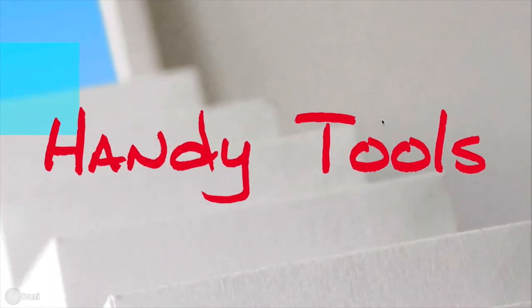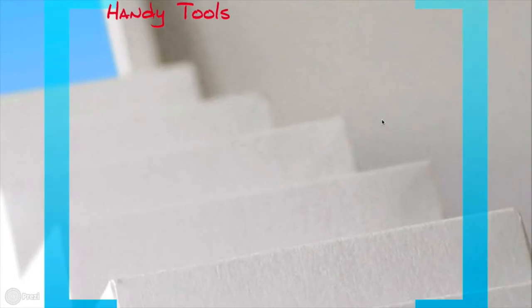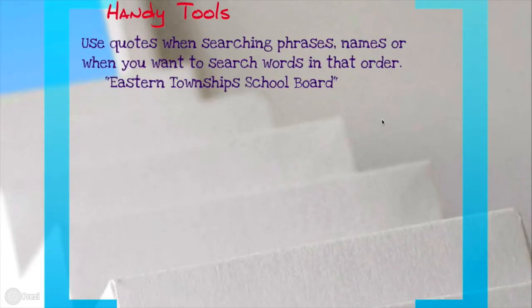Here are some handy tools that will also help you find more specific research results. You can use quotes when you're searching phrases or names — situations when you want words to be exactly in the order that you put them in. For example, I put in 'Eastern Townships School Board' so that I get information on that school board, and not all different schools in the Eastern Townships or boards of directors or anything like that. We want 'Eastern Townships School Board.'